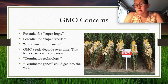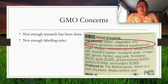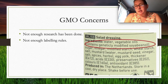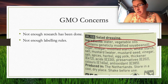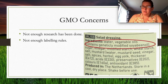However, the terminator gene could potentially spread into the wild with unintended consequences. There's not enough research being done on GMOs, and there are insufficient labeling rules, so we don't fully know what GMO products we're consuming since it's not legally required to list them all — which can be a real concern.